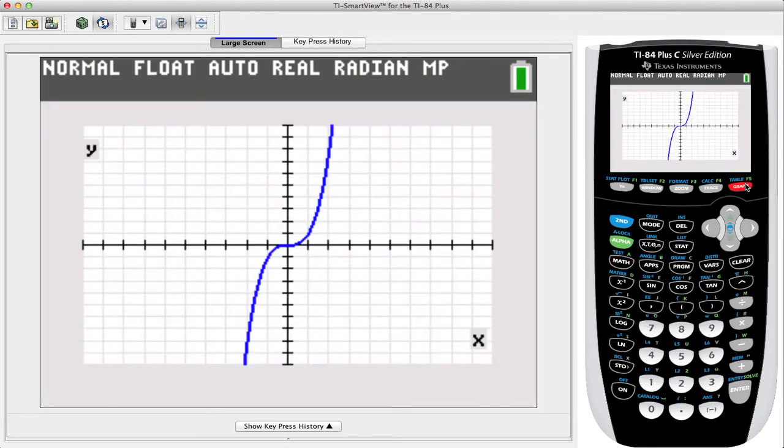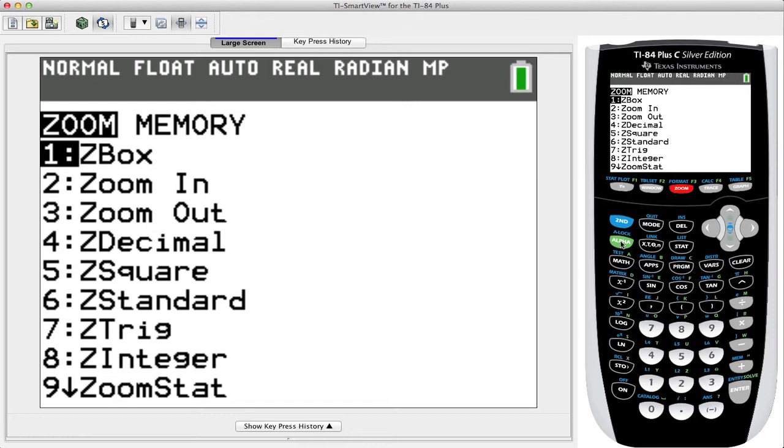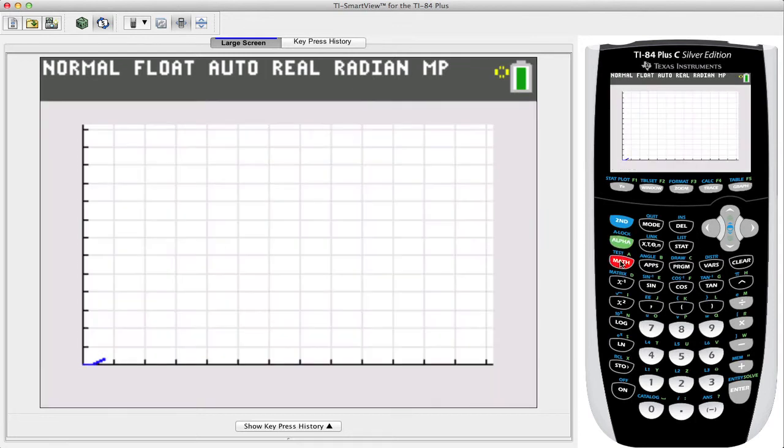I need to hit zoom first, and then I'm going to press alpha and A to give me the first quadrant. And I want to zoom in some more.